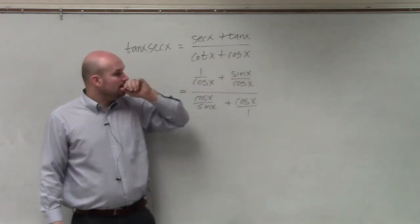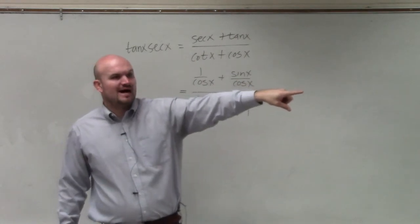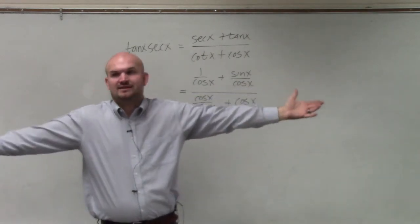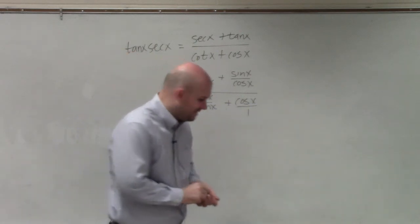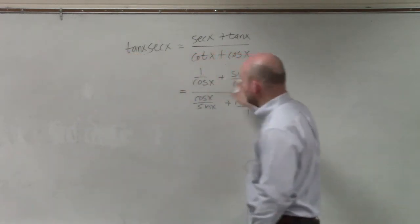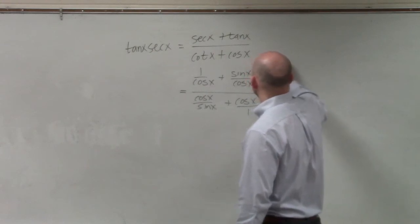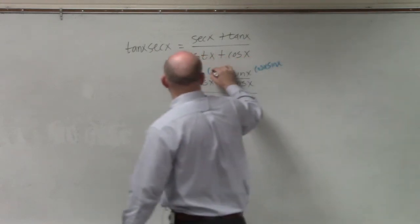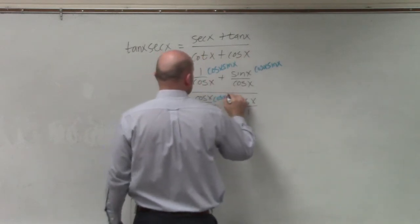Or what math did I show over there? Instead of combining them, I just decided to multiply everything by the common denominator. And that's what I'm going to do here. So the common denominator of all of my denominators is cosine of x, sine of x. So I'm going to multiply everything by cosine of x, sine of x.